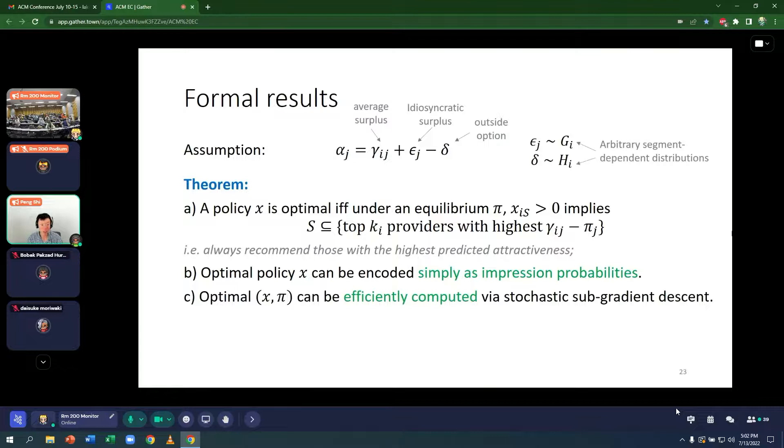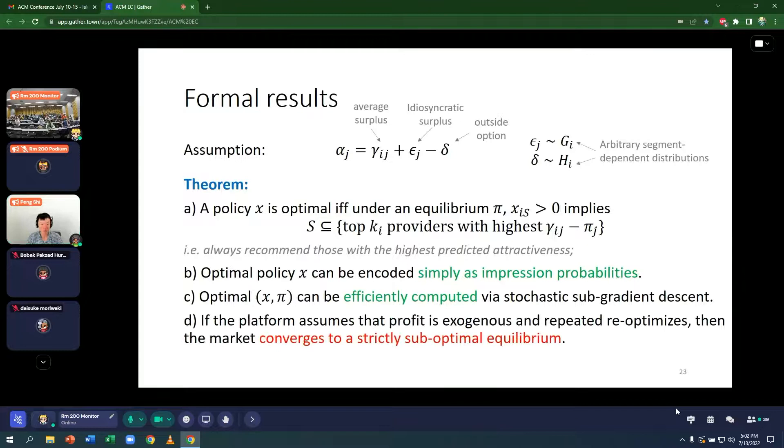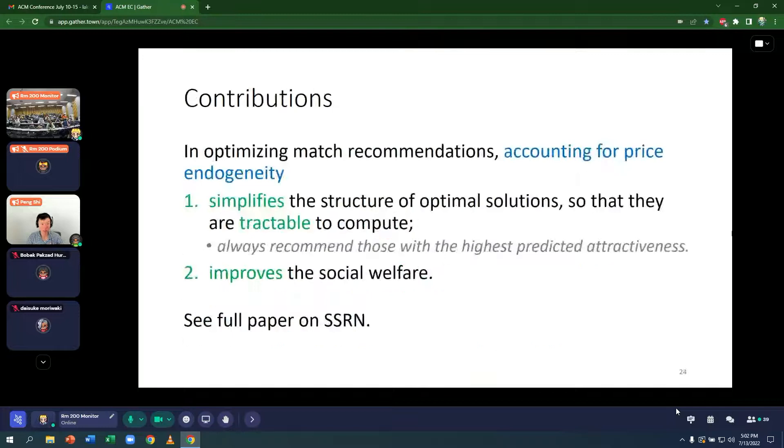Third, an optimal policy as well as the profit vector pi can be efficiently computed via stochastic subgradient descent. The paper has code that for thousands of customer segments and thousands of providers compute the optimum within minutes. So it's very efficient. And finally, if the platform had a wrong model and assumed that profit is exogenous and repeatedly re-optimizes once it sees prices change, then the market will always converge to a strictly suboptimal equilibrium. So assuming the wrong model and just keep re-optimizing it will not work.